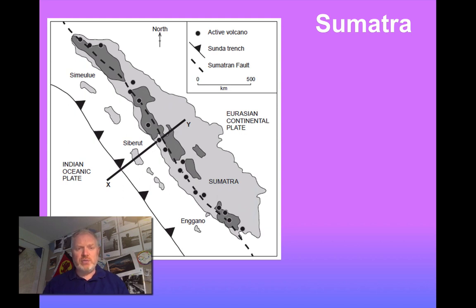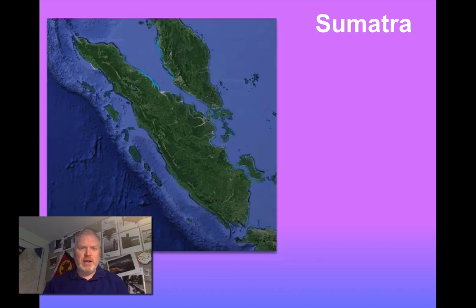So where the two come together, we see a trench. If we just go back very quickly to the satellite image, you can see the very dark blue band just to the west of the islands. That marks the Sunder Trench.